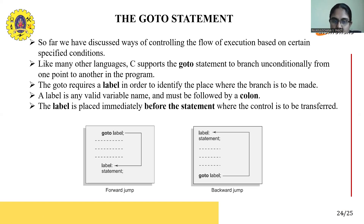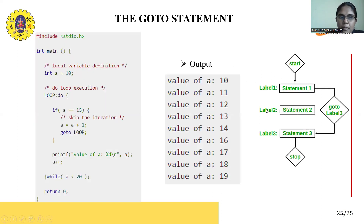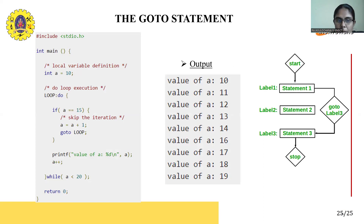There are two ways goto can jump: forward jump or backward jump. In a forward jump, the label is placed after the goto statement; in a backward jump, the label is placed before the goto statement. For example, with a equal to 2, 'loop' is the goto label. If a is less than 15, a is incremented by 1 and control goes back to loop. When the condition is false, it comes out of the loop.